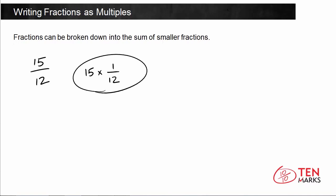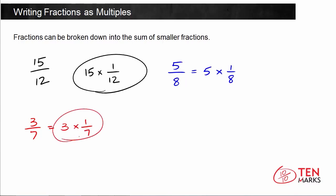Let's recap because we did a few different fractions. We had 5 eighths, and we wrote this as 5 times 1 eighth — that was the multiplication sentence for that. The other fraction we did was 3 sevenths, and we determined that in this fraction there are 3 one-seventh pieces, so 3 times 1 seventh. The way we've solved all of these problems follows the same pattern, whether the fraction is greater than 1 or not. We found the unit fraction — 1 seventh, 1 twelfth, and 1 eighth — and a unit fraction just has a numerator of 1.